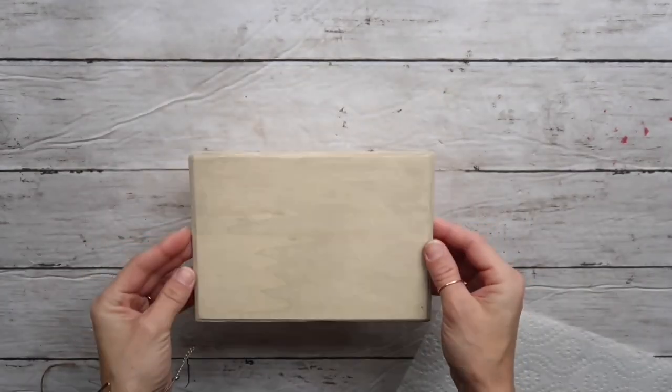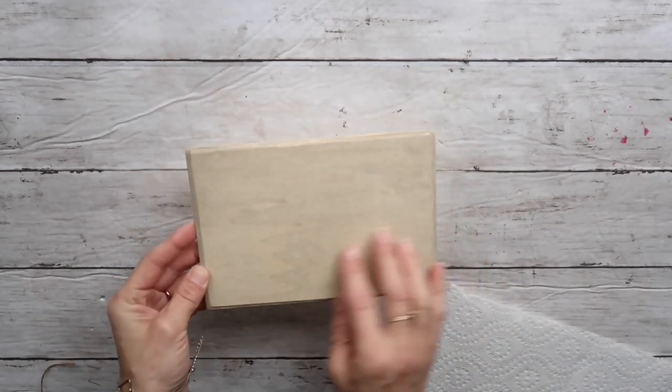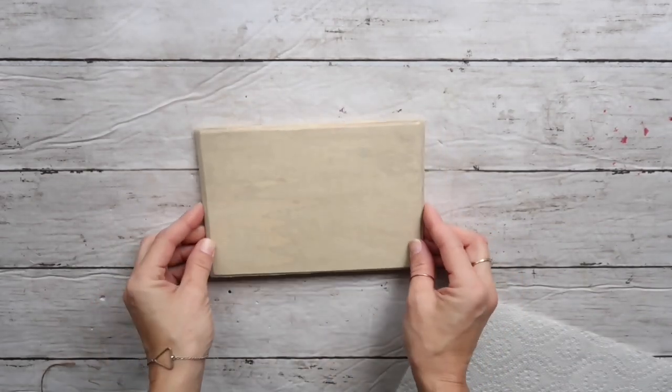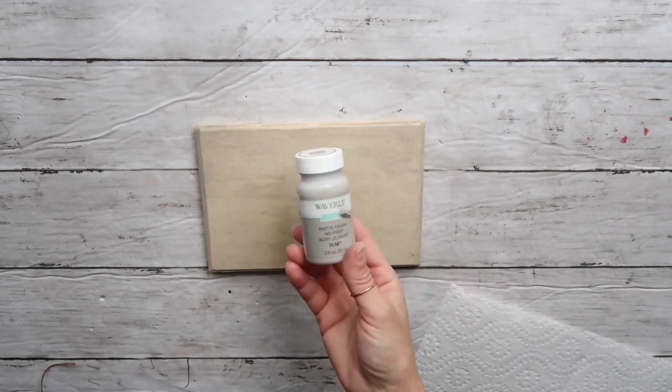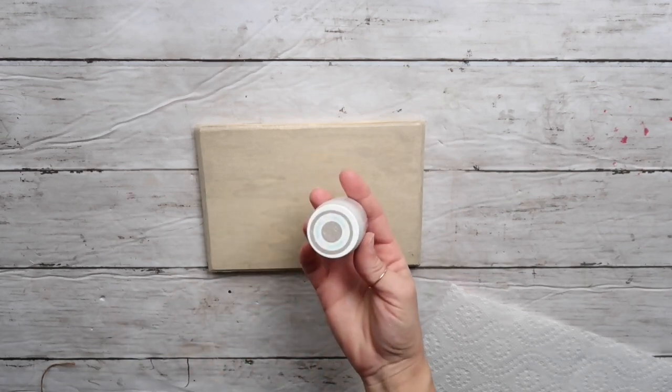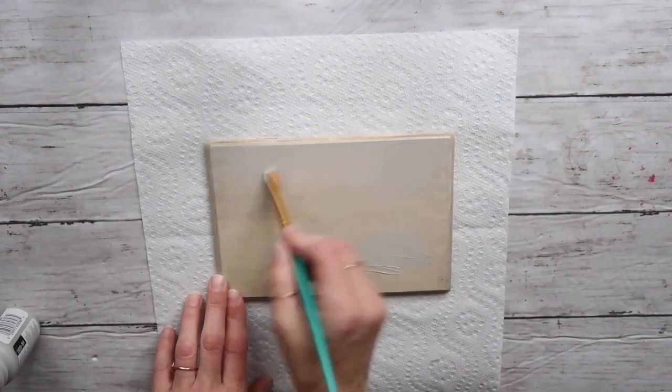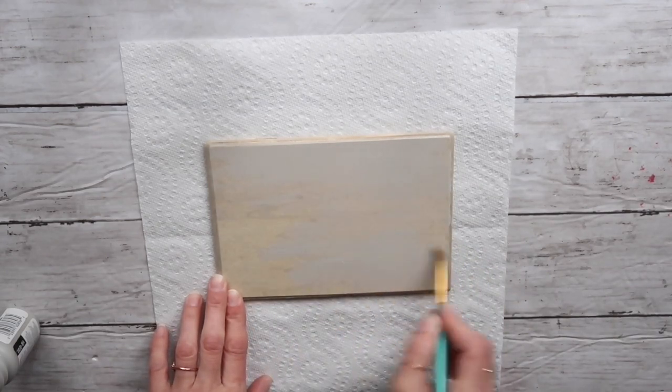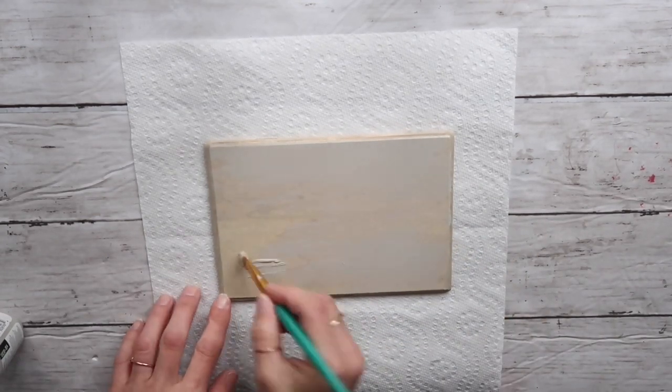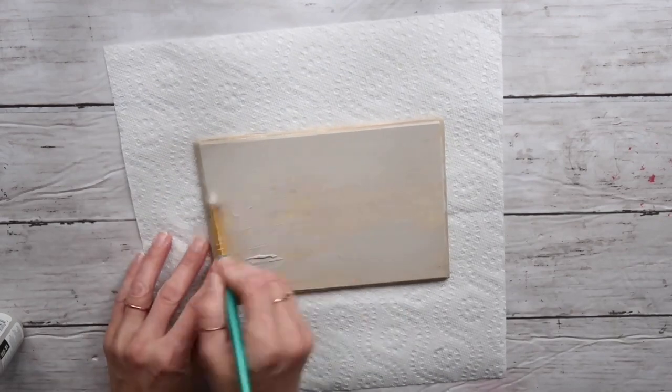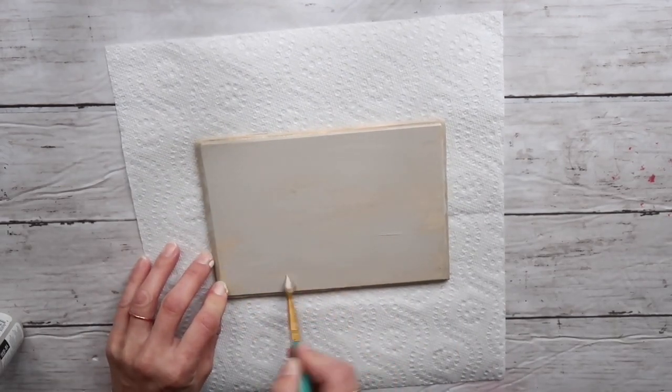On to my second project. I'm using this wood plaque that came from Walmart. I know Dollar Tree sells the same. I'm going to take Rust-Oleum chalk paint, actually Waverly chalk paint in color Mineral, and cover it completely. I gave it one full coat.